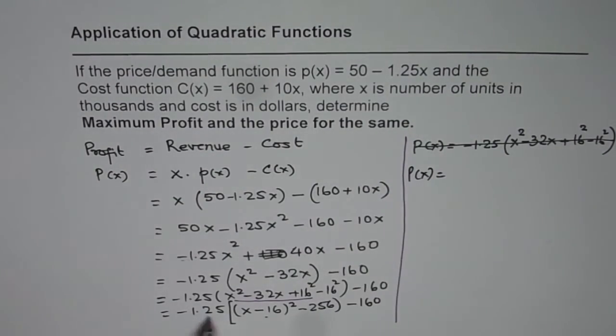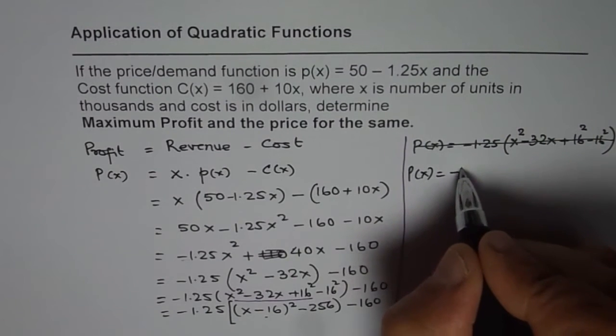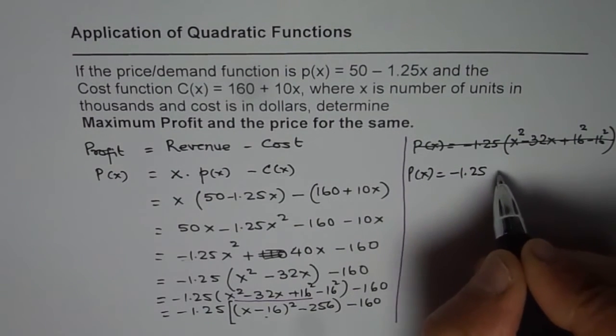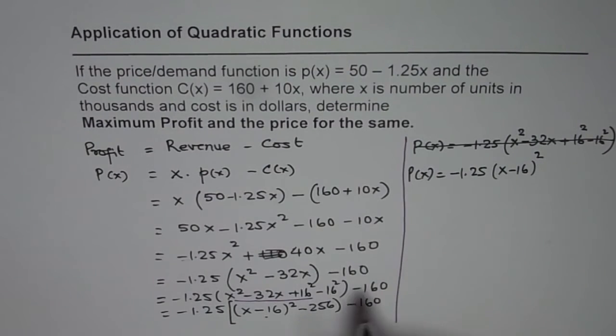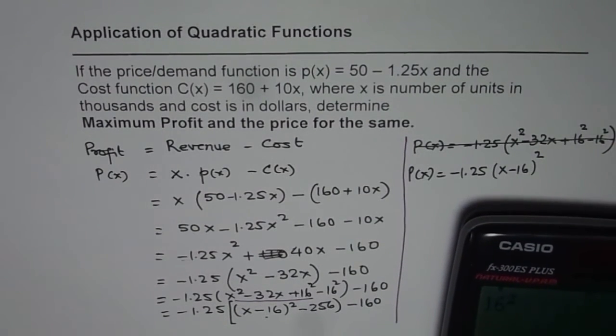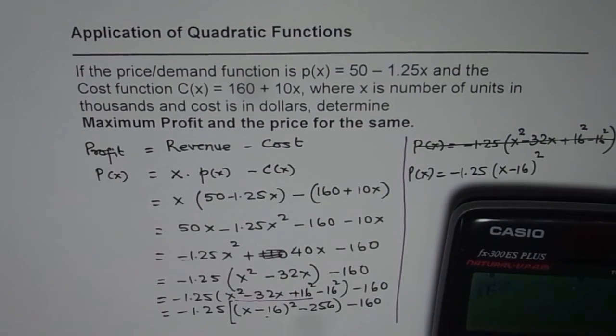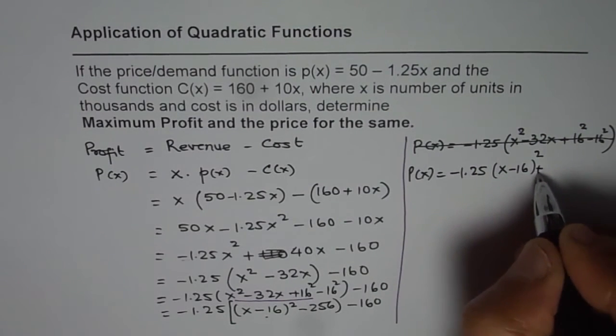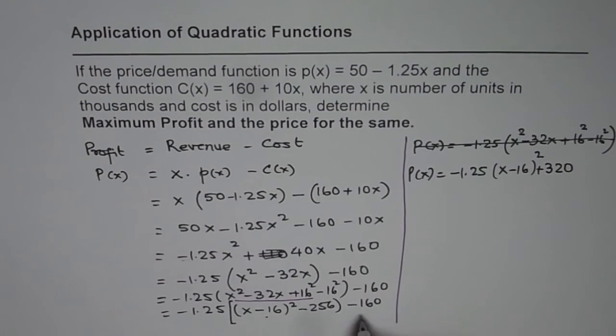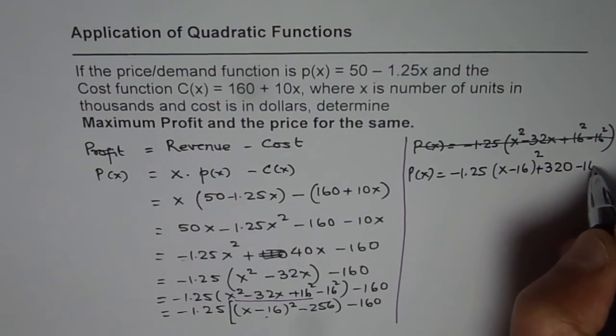So the profit function is, open the brackets, minus 1.25 x minus 16 whole squared. And then when you multiply 256 with 1.25, what do you get? 256 times 1.25 gives us 320. So that is plus 320 and we have minus 160.